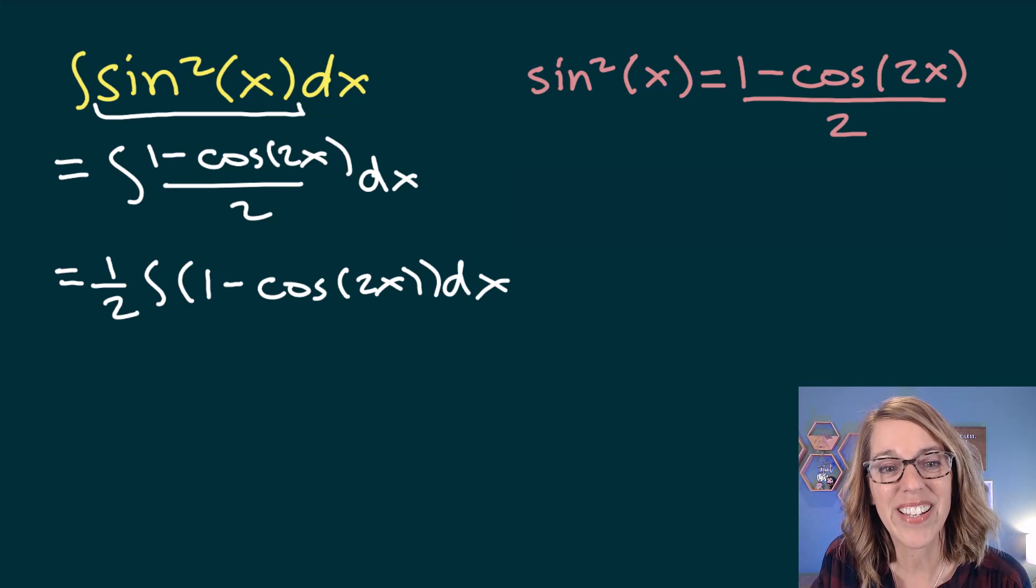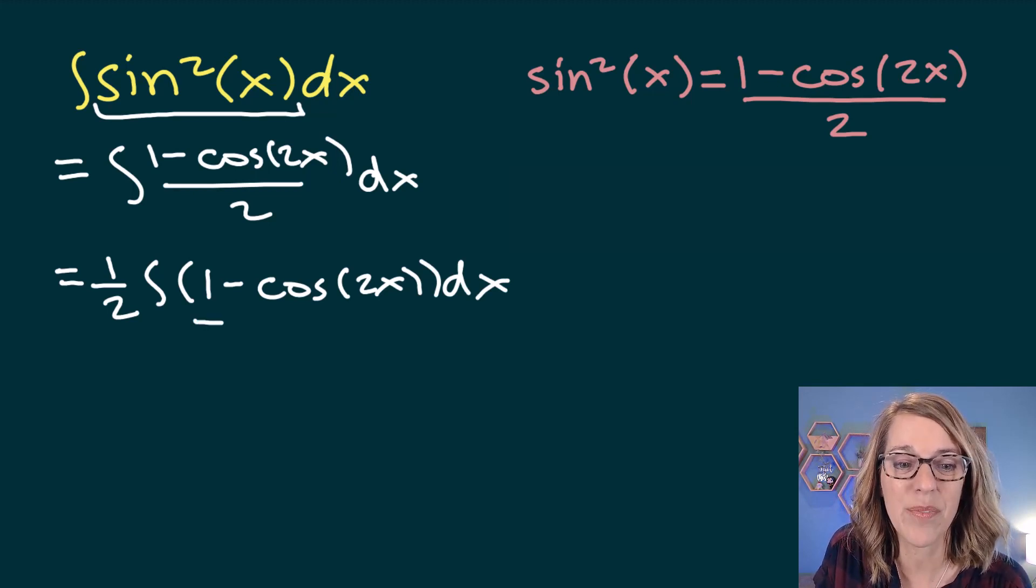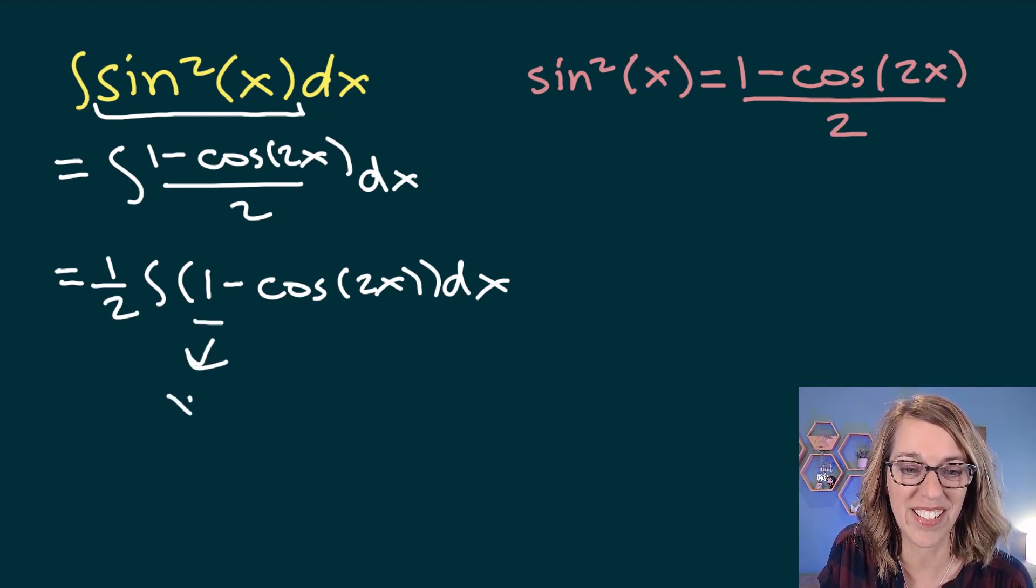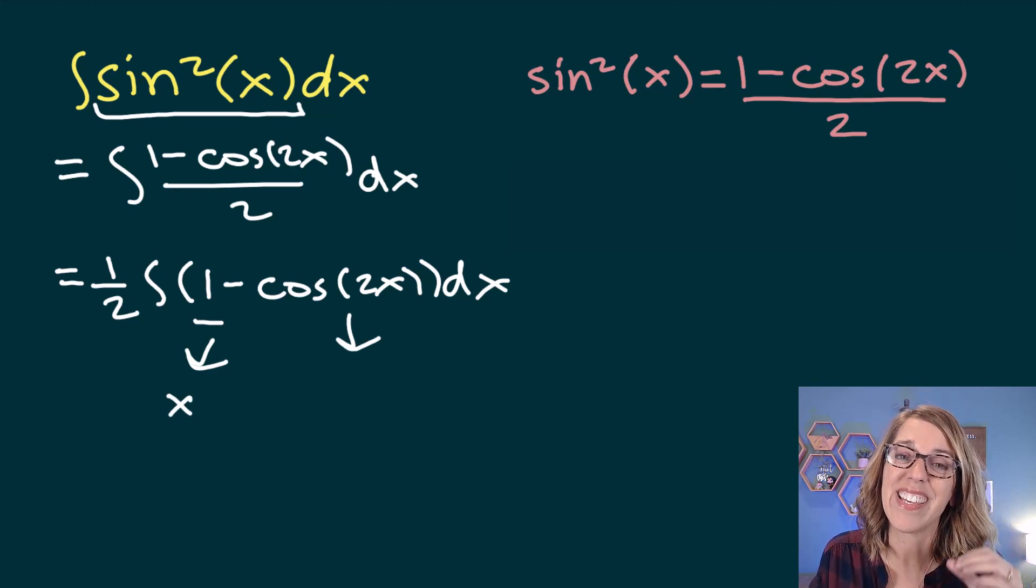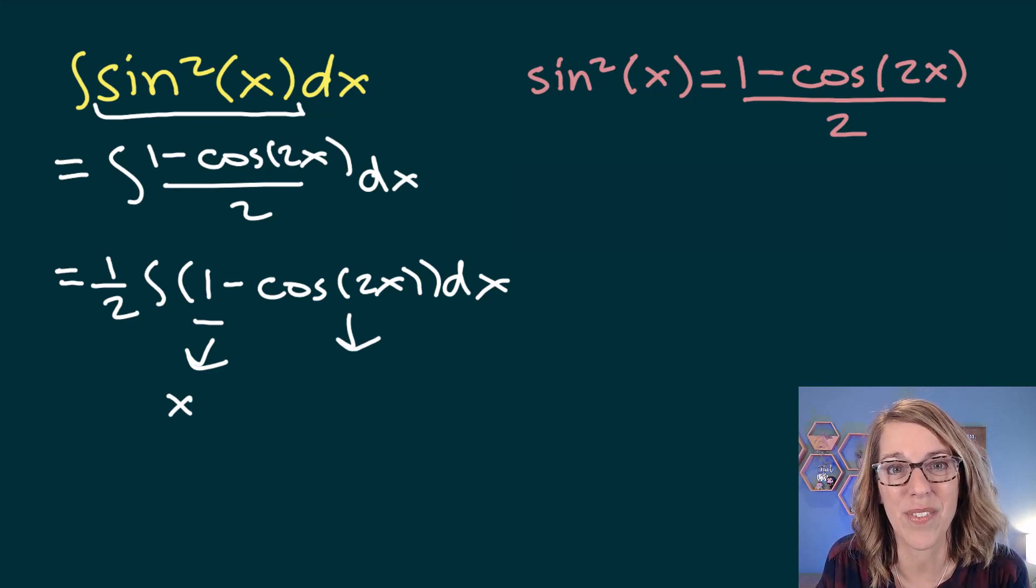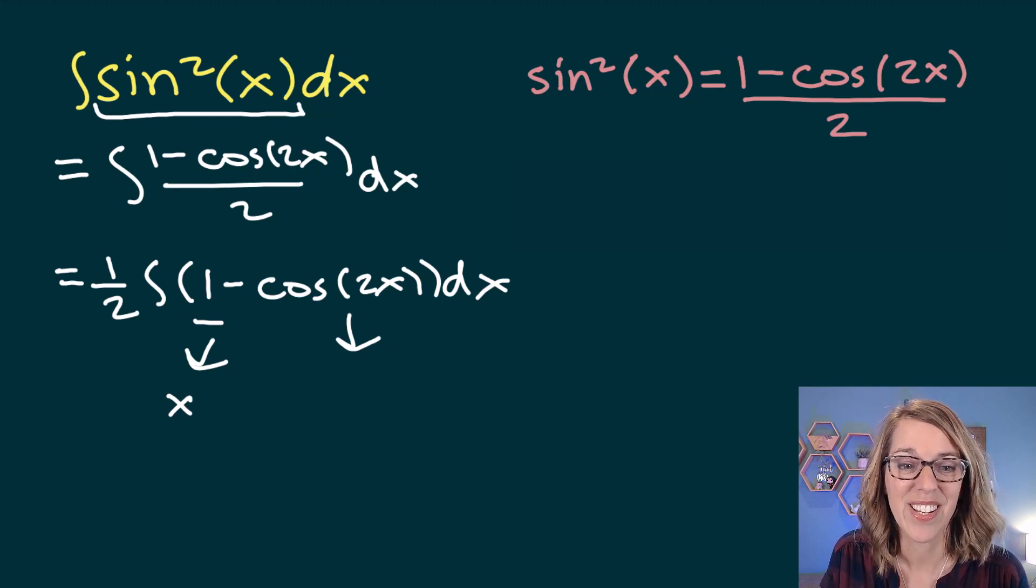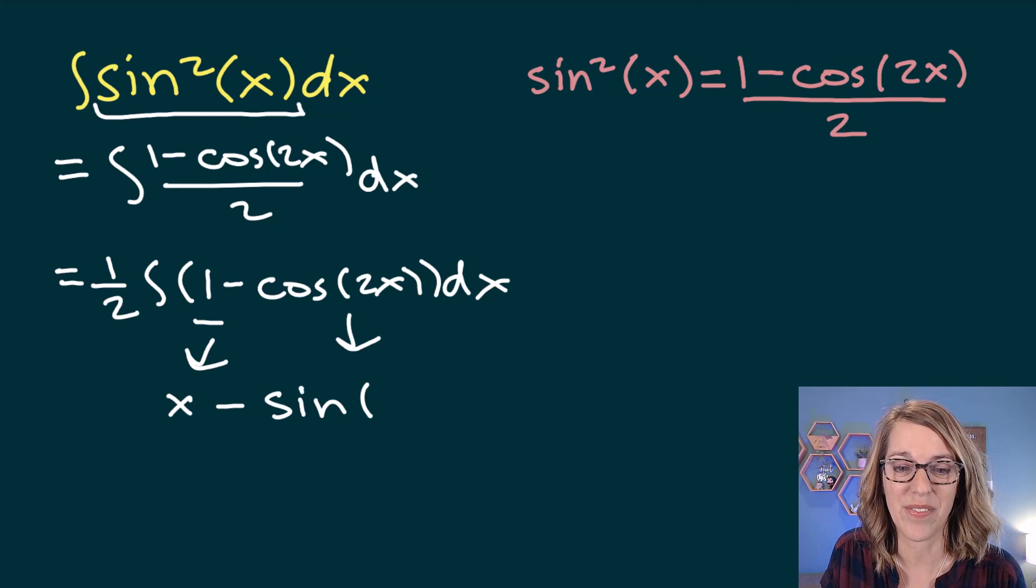Now I can go ahead and integrate the 1, which goes to x. And I can integrate that negative cosine. The integral or the anti-derivative of cosine is sine. So I'm going to keep the negative. I end up with a sine of 2x.